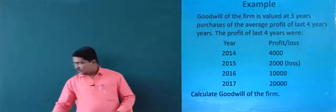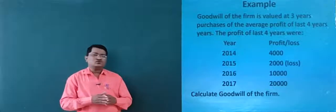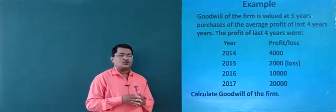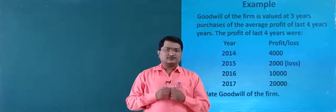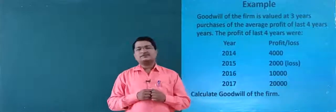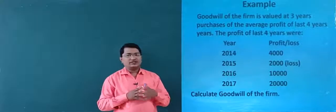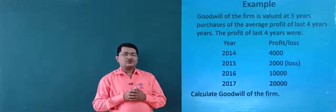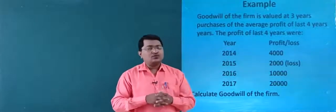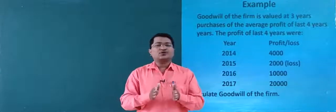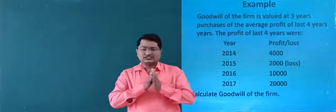You already know the formula used to calculate value of goodwill under simple average profit method. The formula is: valuation of goodwill is equal to average profit multiplied by number of years of purchases.